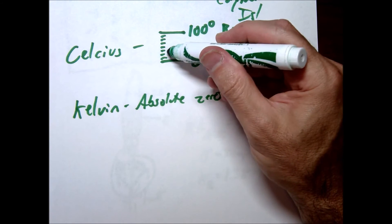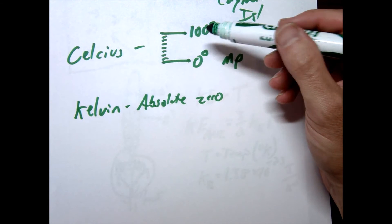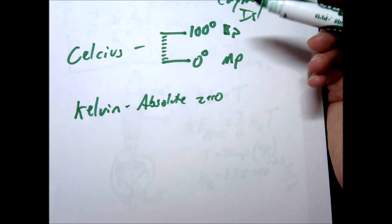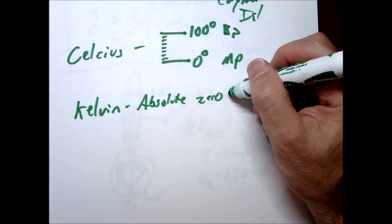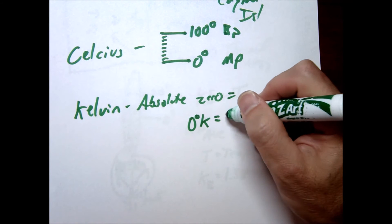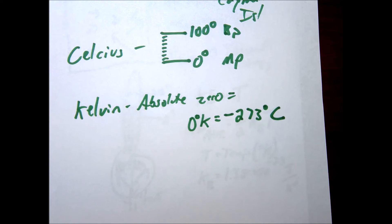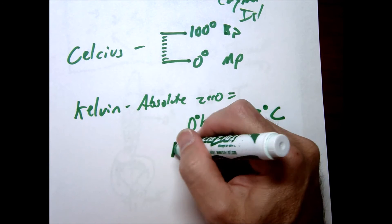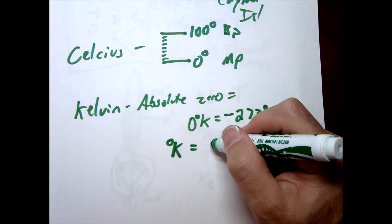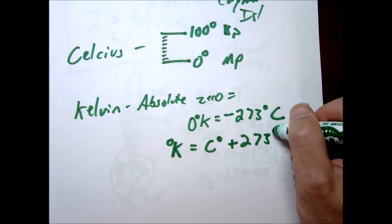Now we're going to use the same increments as Celsius. In other words, an increase of one degree Celsius is going to be also an increase of one degree kelvin. So absolute zero is going to be equal to zero degrees kelvin, which is about negative 273 degrees Celsius. So the conversion if you're trying to go from Celsius to kelvin would be degrees kelvin equals degree Celsius plus 273 degrees.